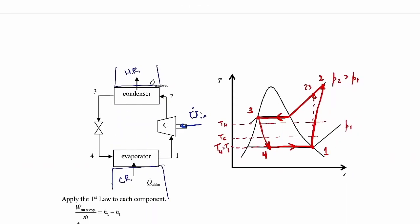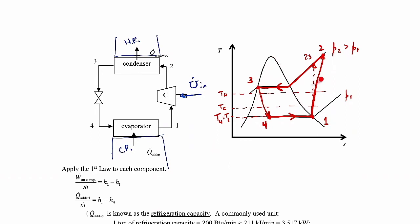This is called a vapor compression refrigeration cycle because we're dealing with the vapor dome — vapor for part of the cycle and a saturated liquid-vapor mixture for the other part. This is the typical cycle used in a refrigeration unit like your home refrigerator, and also for air conditioning. An air conditioner is essentially a big refrigerator for your house. The cold reservoir would be your house, the hot reservoir would be the outside. For a home refrigerator, the cold reservoir is the interior and the hot reservoir is the kitchen, with condenser coils in the back dissipating heat.